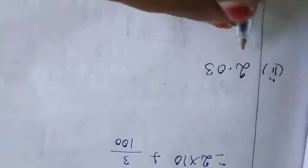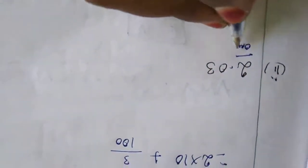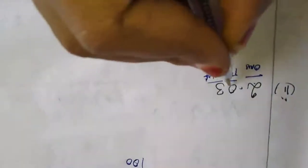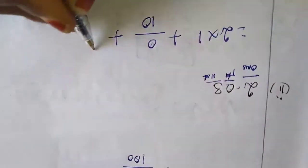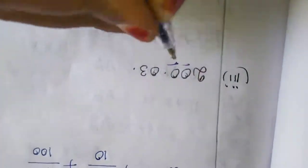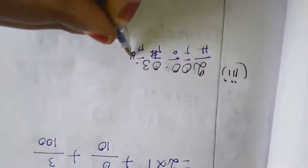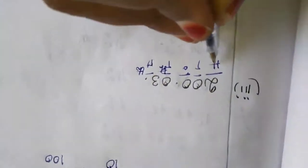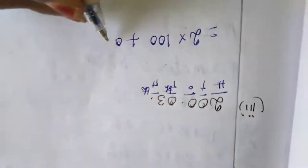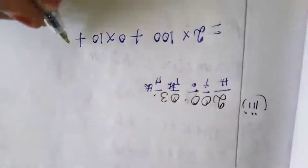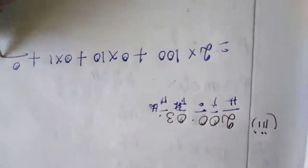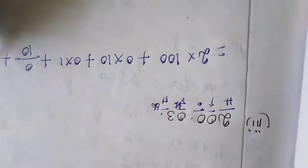Now I am going to record the second example. This is in the 1's place, this is in the 10th place, this is in the 100th place. So we write: 2 into 1 plus 0 by 10 plus 3 by 100. For the next one: 2 into 100's place, 0 into 10, 0 into 1, plus 0 by 10, plus 3 by 100.